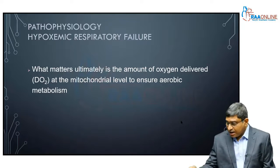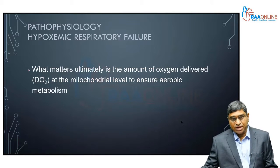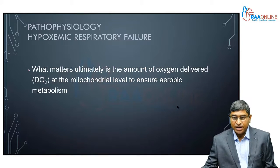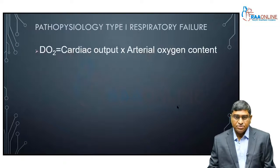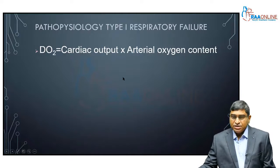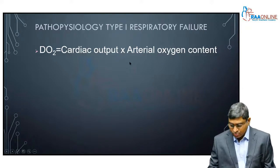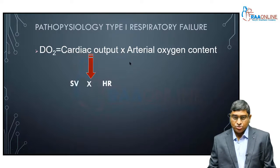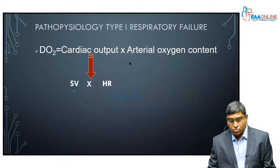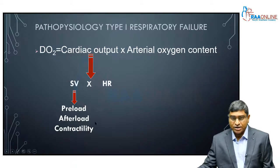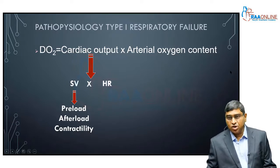In hypoxemic respiratory failure, what ultimately matters is the amount of oxygen delivered to the tissues and available at the mitochondrial level to ensure aerobic metabolism. Oxygen delivery is a function of arterial oxygen content and cardiac output. Cardiac output depends upon stroke volume and heart rate, and stroke volume in addition depends upon preload, afterload, and contractility. We will concentrate on the arterial oxygen content.